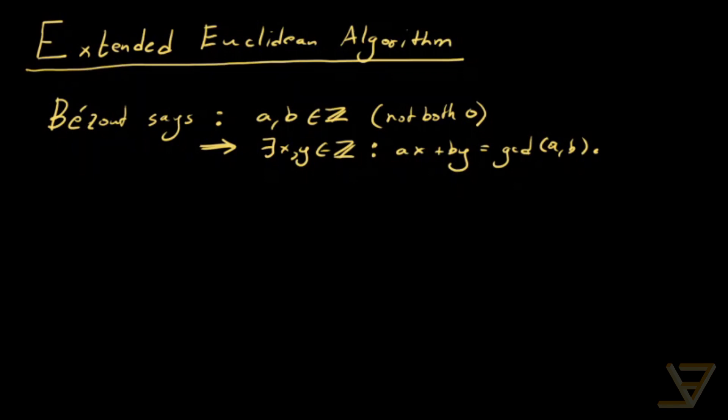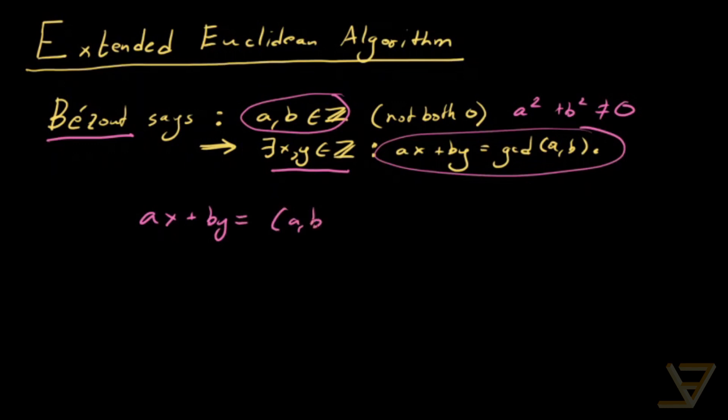What the extended Euclidean algorithm is all about is finding Bézout coefficients. So remember Bézout's lemma. It says that if a and b are integers such that a squared plus b squared is not equal to zero, which essentially means that at least one of them is non-zero, then there exists x and y in the integers such that this equation holds. So ax plus by equals to gcd of a and b.